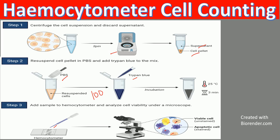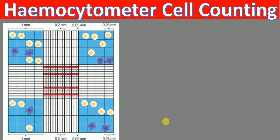So when you observe under a microscope, what do you see? You see this kind of grid. In this grid, you are only going to count the cells that are present in the big squares that are present in the corners — only these four big squares in the corners. You are not going to count the cells that are present here or here or outside these big squares.